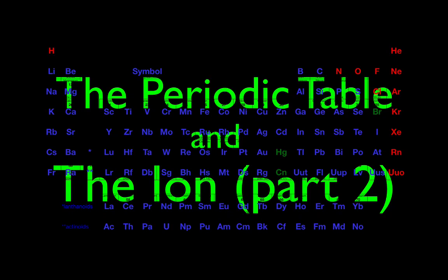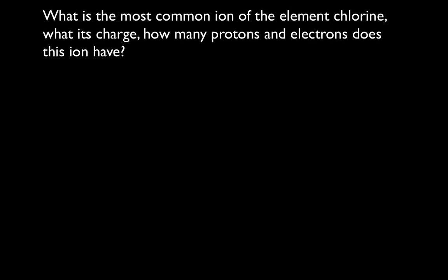Now we can go through and answer the questions. The first question: what is the most common ion of the element chlorine — what is its charge, how many protons, how many electrons does it have? We look for chlorine on our periodic table. It's number 17, also a group 17 element, and its symbol is Cl. The atomic number 17 tells us it has 17 protons. If it was neutral, it would also have 17 electrons. But the most common charge on the ion is negative one, which means it has 18 electrons — one more negative than positive — giving a negative one charge. This is the ion symbol for the chlorine ion.